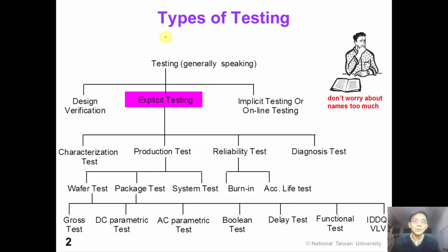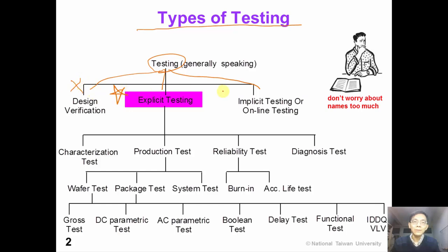This page shows you a tree of many different types of testing. Starting from the root of the tree, generally speaking, the concept of testing can be classified into design verification, implicit testing, and explicit testing. In this course, we will focus on explicit testing only. We are not going to go into details of design verification or online testing.